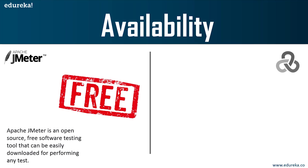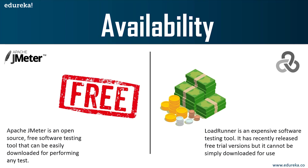The first parameter is availability. Apache JMeter is an open source, free software testing tool that can be easily downloaded for performing any test. LoadRunner is an expensive tool, although it now offers a free version with almost all of its abilities, but this version is limited to 50 virtual users. JMeter, which is completely free including all its plugins, offers all its abilities to as many users as your infrastructure can handle — typically local machines can handle up to 1,000 virtual users — so JMeter gets you closer to your targets without any added cost.